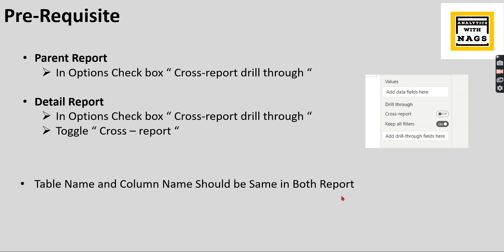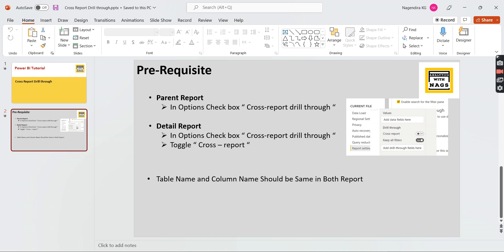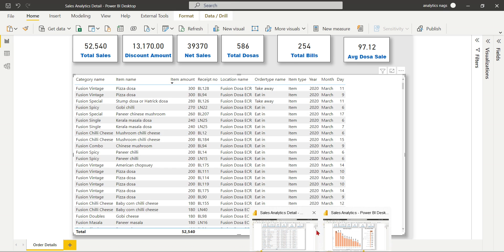Another prerequisite is that the table name and column name must be the same in both reports. Since you have an aggregated model and a detail model, the column names used for the categorical or drill-through fields must match. That's it — let's check it out in Power BI.